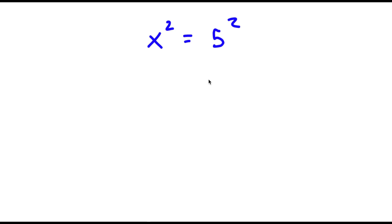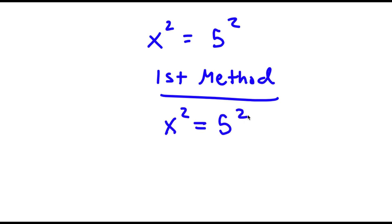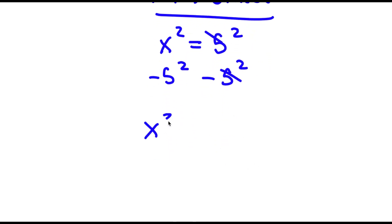Alright, so I have x to the power of 2 is equal to 5 to the power of 2. Now, to solve this problem I actually have two different methods. For my first method, I start with x to the power of 2 is equal to 5 to the power of 2. I'm going to be subtracting 5 to the power of 2 from both sides, so I'm left with x squared minus 5 squared is equal to 0.